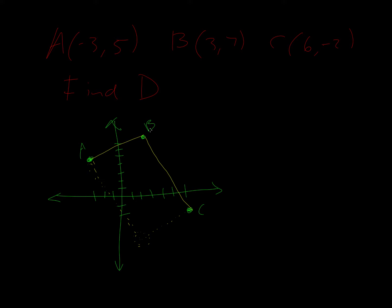So we find the slope of A, B. And so our change in Y, we can see we go from five to a seven, so that's going to be a two rise. And then our run is from negative three to three, and so that's a six. And so if we simplify that, we get one third. So the slope of A, B is one third.